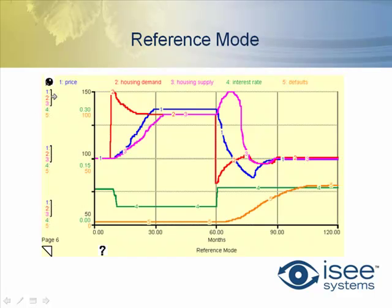The problem we're looking at — this is the reference mode — was built using sketchable graphs. I did a number of sketchable graphs and then printed them all together on the same graph to produce a reference mode. The problem we're looking at is the latest housing crisis; we've seen a lot of housing defaults, and why might this have happened?